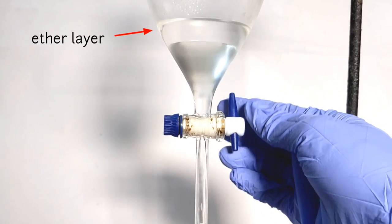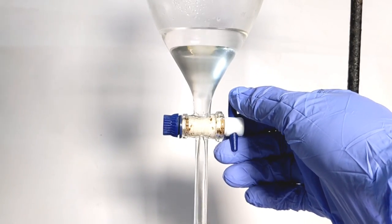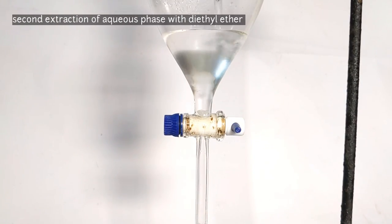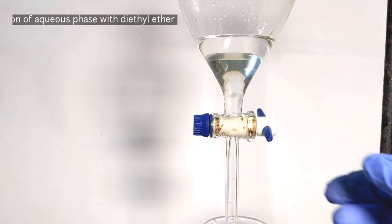The lower aqueous layer was again taken up in the separatory funnel and a second rinsing with diethyl ether was done. Again 15 milliliters of diethyl ether was used.